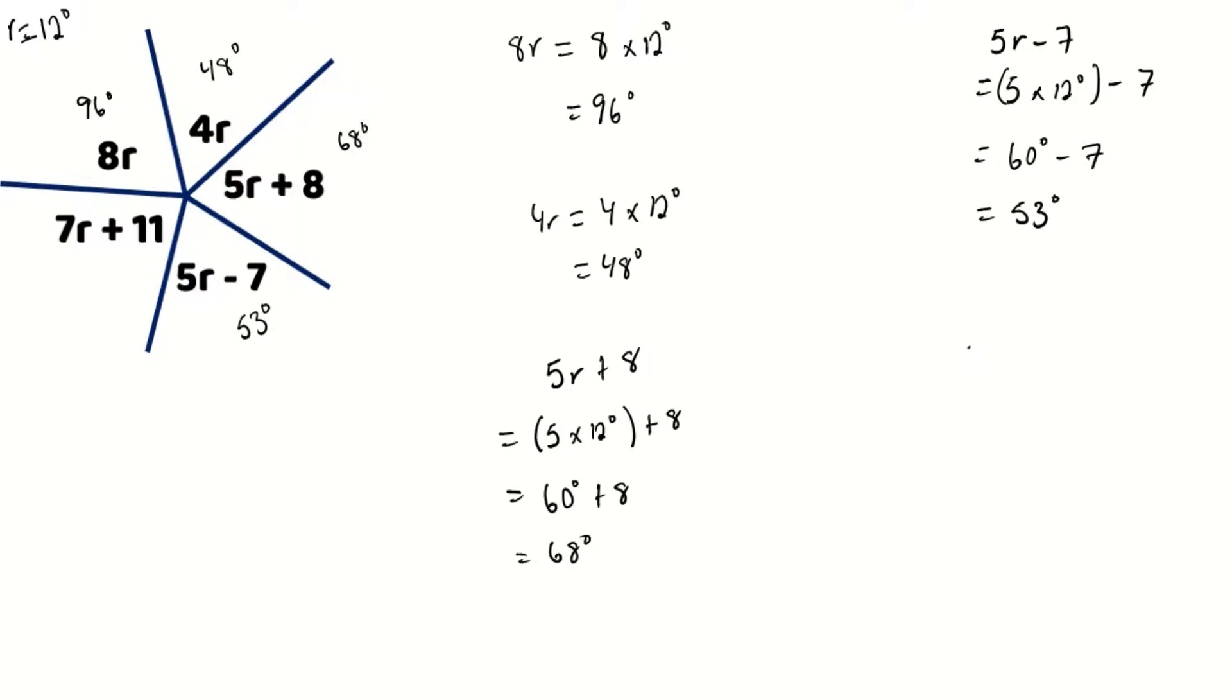And our last part is 7r plus 11. 7 times 12 degrees, and its product added to 11. So 7 times 12 is 84 degrees. 84 degrees plus 11 is equal to 95 degrees.